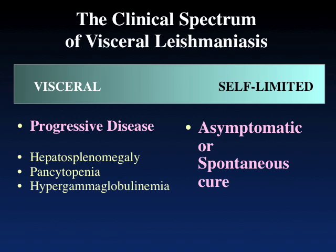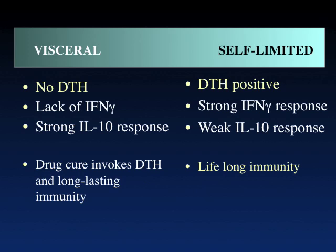The spectrum from progressive to self-limited visceral disease can be explained by the type of immune response generated — mostly the cell-mediated immune response. People with progressive visceral disease don't have delayed-type hypersensitivity (a good marker for cell-mediated immunity), while those who self-limit are strongly DTH positive. In progressive visceral disease there is very little production of interferon gamma and a strong response of interleukin-10, which is a regulatory cytokine that inhibits pro-inflammatory T-cell responses. Self-limited disease shows the opposite — strong interferon gamma and relatively weaker IL-10. Fortunately, if patients with visceral disease are treated with appropriate drugs, delayed-type hypersensitivity is invoked and they develop long-lasting immunity. The parasite's lipophosphoglycan likely plays a role as an immune suppressant that directly impairs recovery of effective cell-mediated immunity.